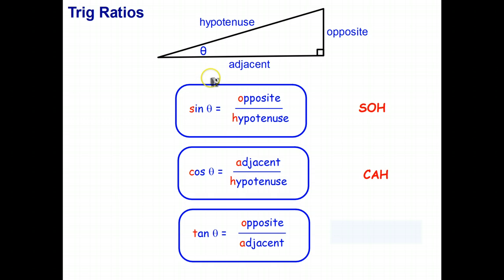And the third trig ratio we've already met, which is the opposite over the adjacent. So for this particular triangle, it's the ratio of that side, which is the opposite side, to the adjacent side. And that is called the tangent, T-A-N-G-E-N-T, but we abbreviate that as just tan. So tan is opposite over adjacent. And we can summarize that as T-O-A. Tangent is opposite over adjacent.